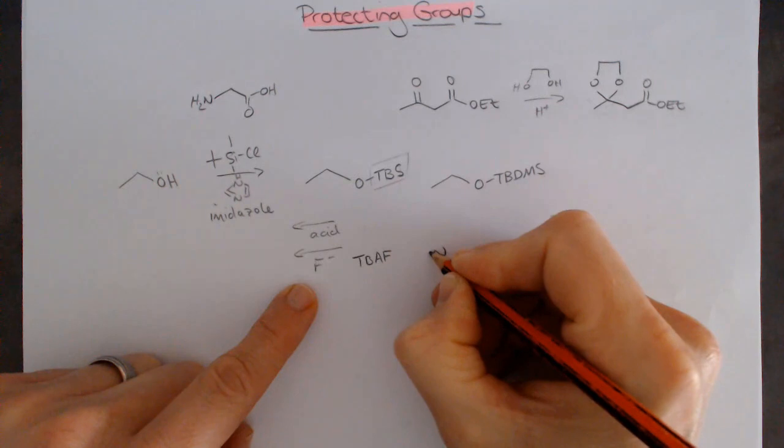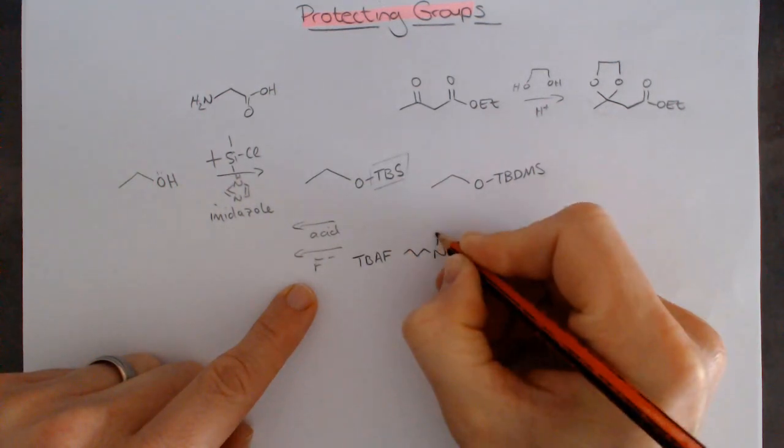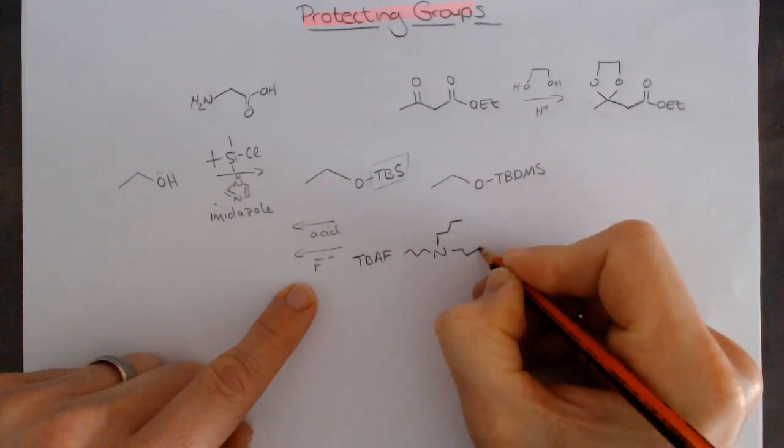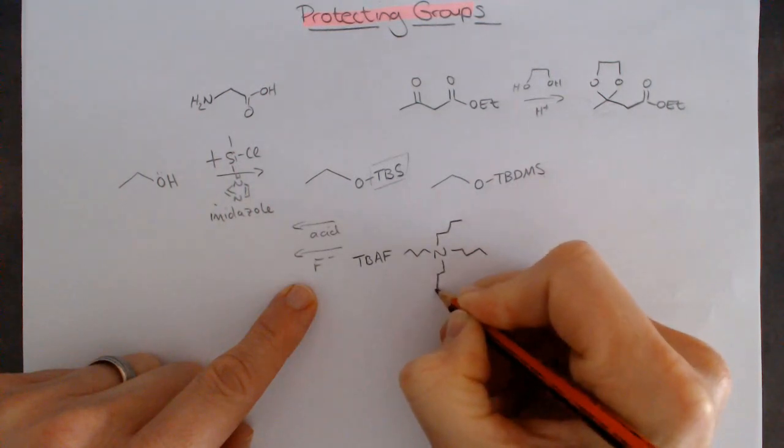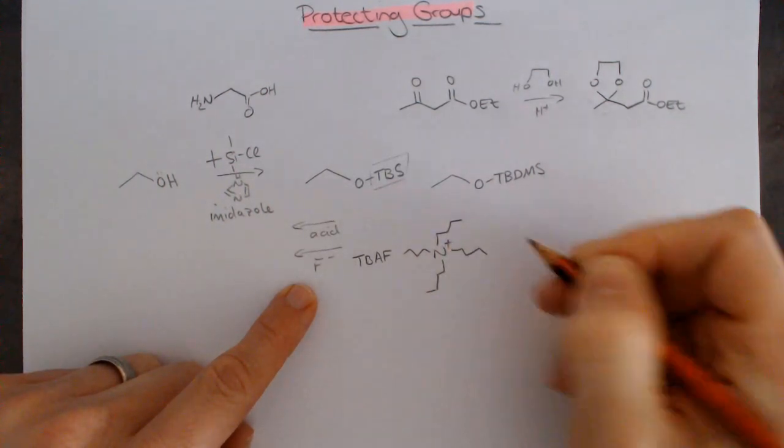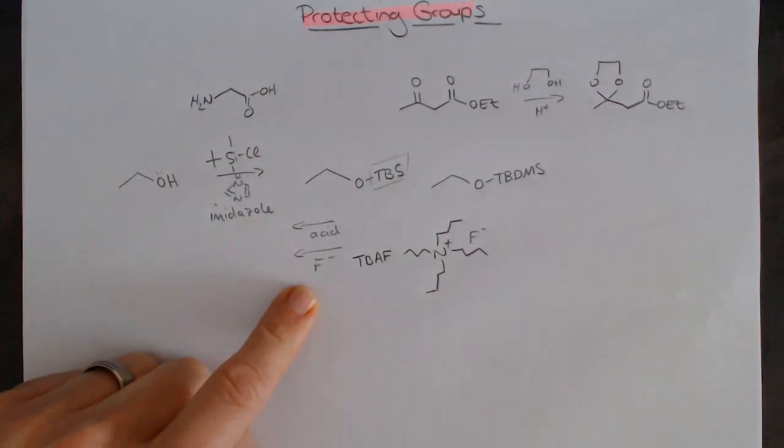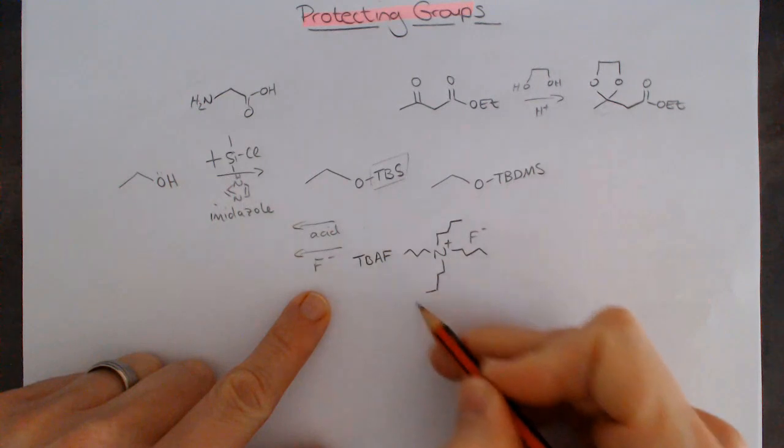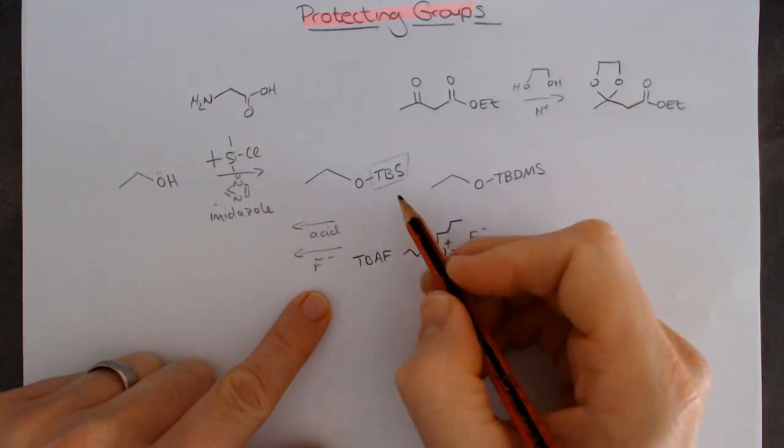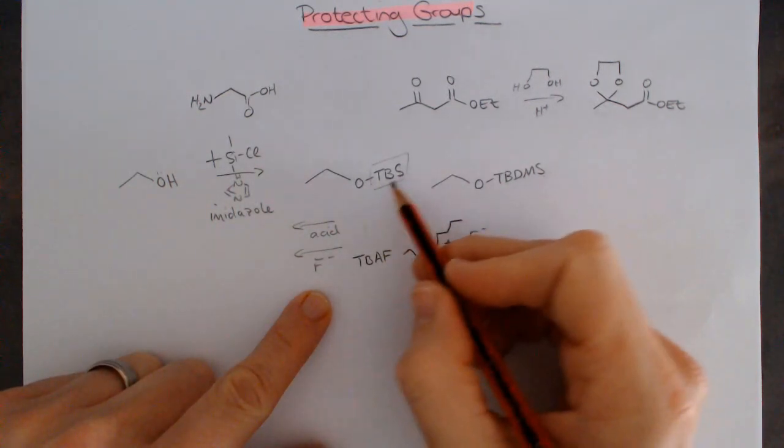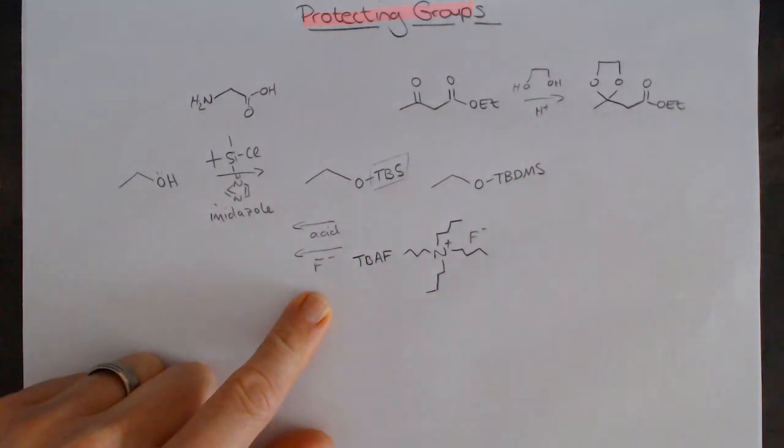It's an ammonium with four butyl groups on it. 1, 2, 3, 4 butyl groups. It's the F- counterion. This is the very common reagent used to deprotect silicon protecting groups, particularly a TBS group.